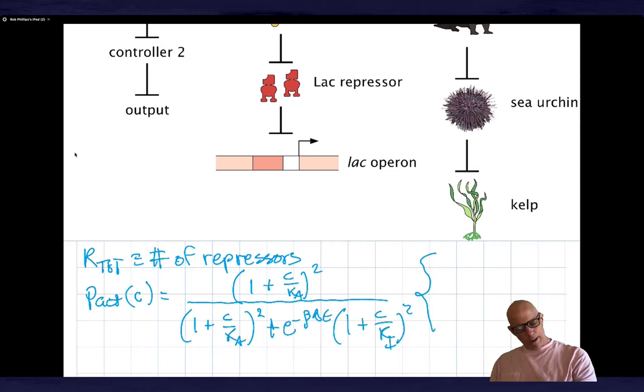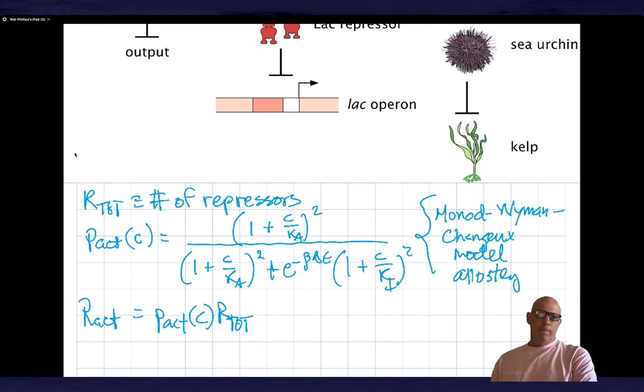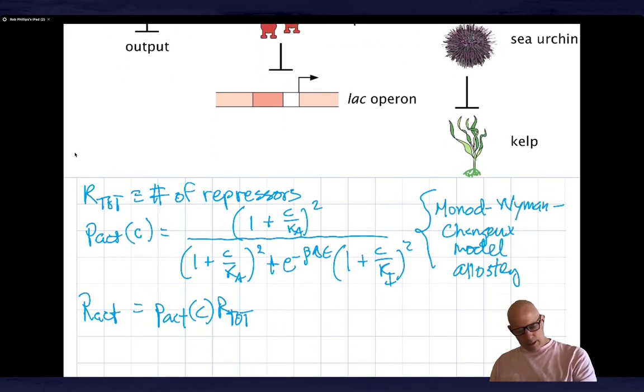The activity of the repressor can be written in this form. This is the famed Monod-Wyman-Changeux model of allostery. It tells us the number of active repressors, which is equal to p_act of c times r_tot. The repressors are either active or inactive, and that depends on how much inducer is around. So c is the concentration of the inducer allolactose.